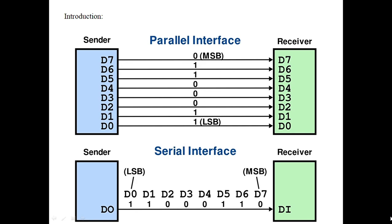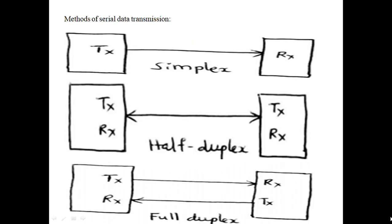In serial communication, the data is transmitted from transmitter to receiver bit by bit — that means one bit at a time. For long-distance communication it is preferred because it uses only a single wire. The disadvantage is low speed when compared with parallel communication. There are three methods in serial communication.